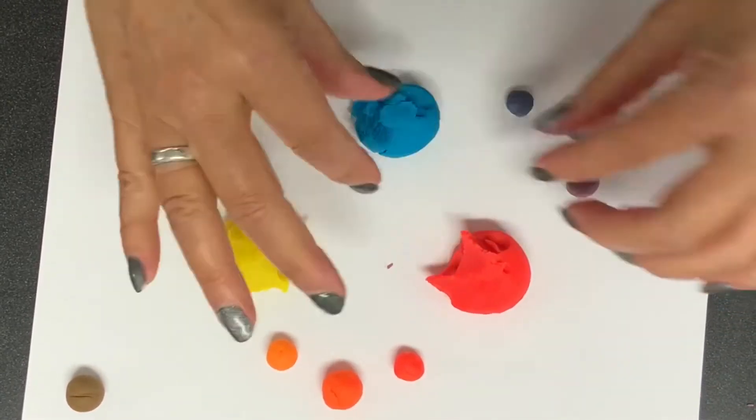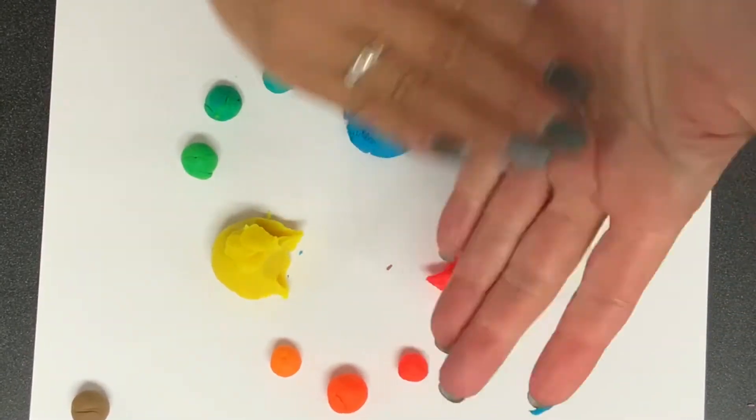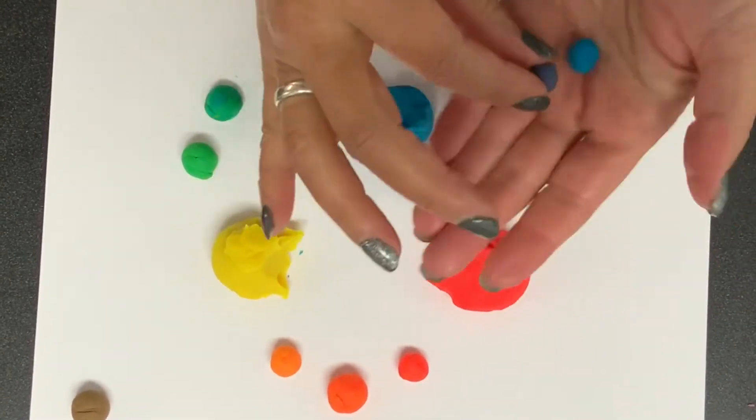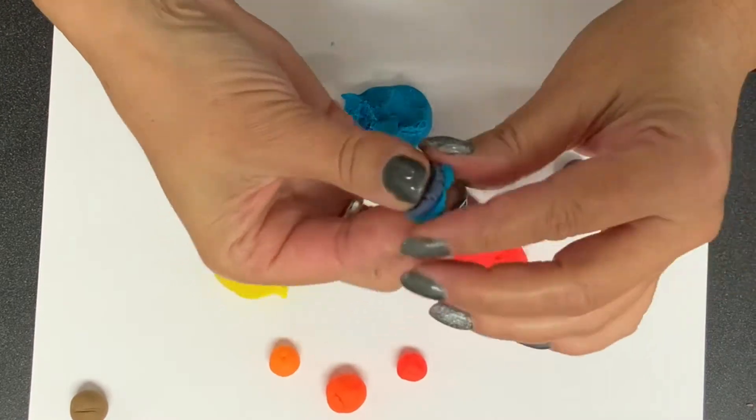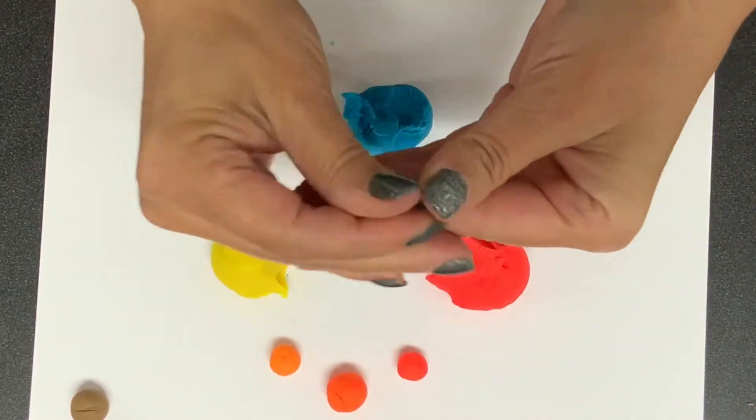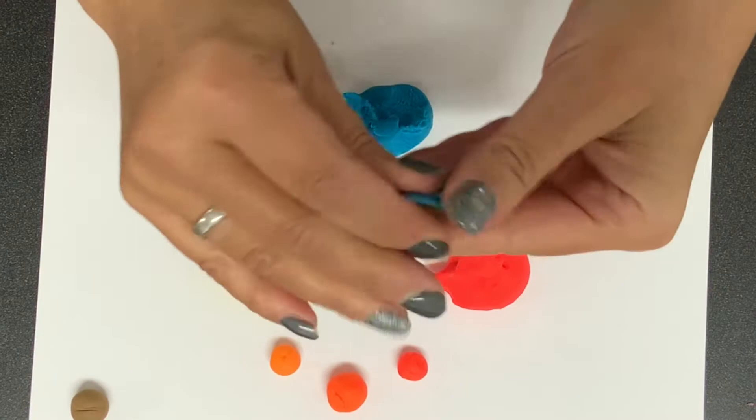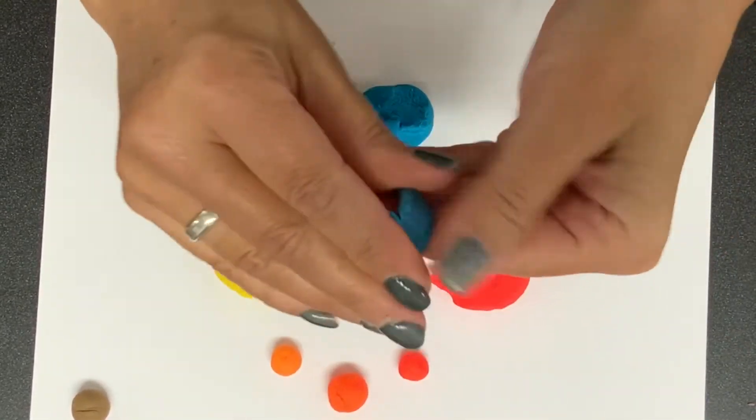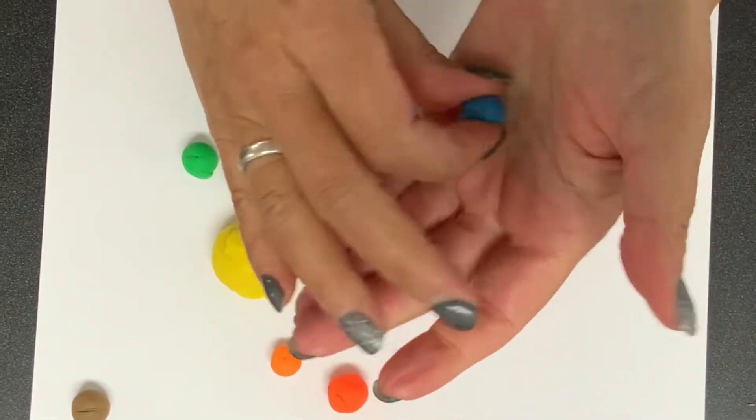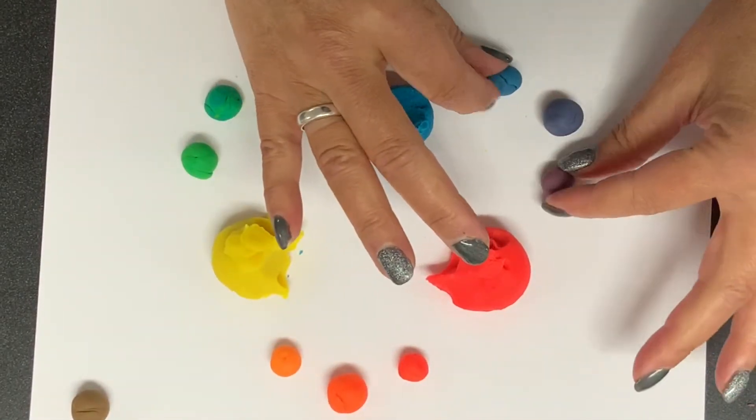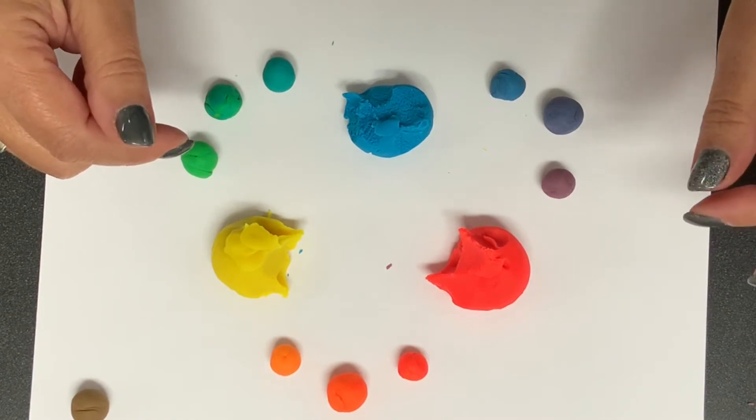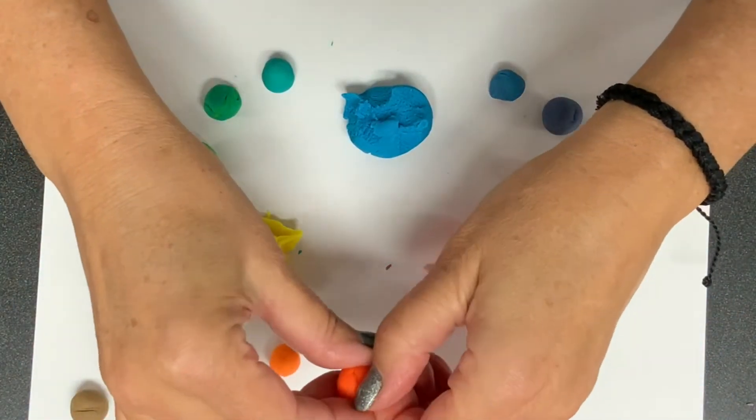And then moving on to blue, pea-sized amount of blue. Mixing that together with violet to create blue violet. So now we have our primary, secondary, and tertiary colors.